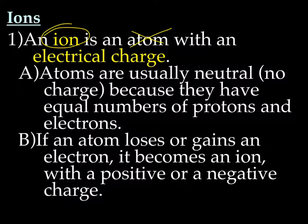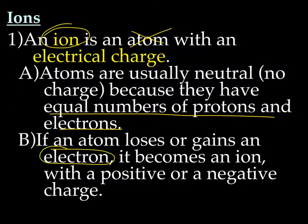Atoms are usually neutral — no charge — because they have equal numbers of protons and electrons. So if an atom loses or gains an electron, it can become an ion with either a positive or negative charge. If an atom loses an electron, it has an extra positive, so it's going to have a positive charge. And if it gains an electron, it now has more negative, so it has a negative charge.